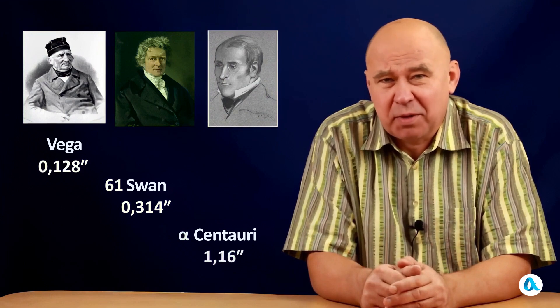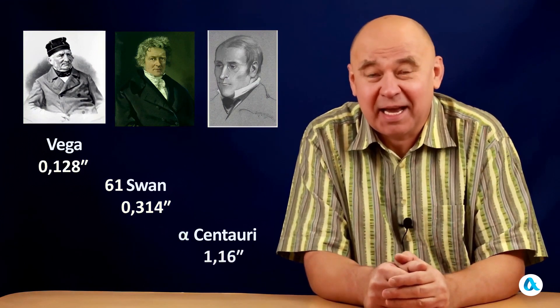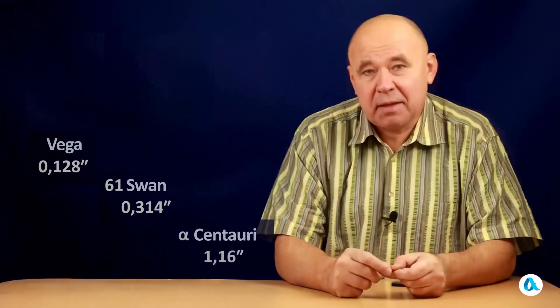Well, according to modern measurements, it's a bit less. So now we need to understand what this angular second actually is. And to visualize this, I'll take a coin with a diameter of 2 cm and a radius of 1 cm. And I'll ask, at what distance do you need to look at it to see that radius at an angle of 1 angular second?